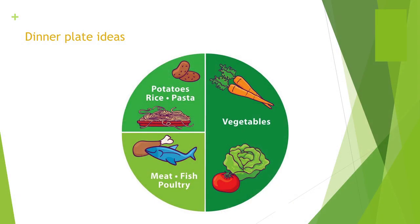Here is a general dinner plate guide. We should be eating more vegetables, a quarter of the plate filled with your choice of meat for the night, and your carbohydrate choice from your cereals or grains food group. It's really important to have enough vegetables to get those cancer-fighting properties.